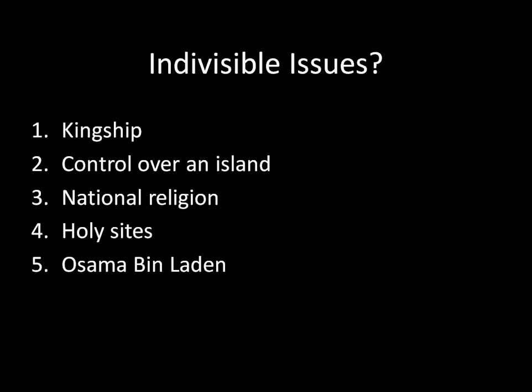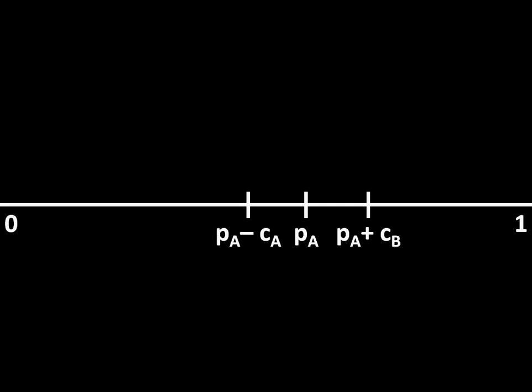So let's talk about this in the context of control over an island. We still see that the bargaining range is here, but we can't actually come up with an agreement that divides it at various points — it either has to be that I control all of it or you control all of it.